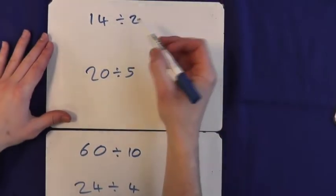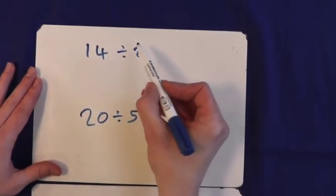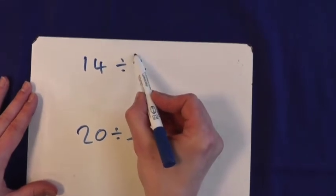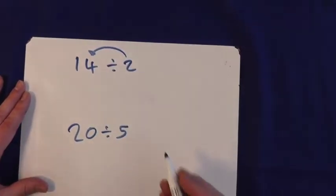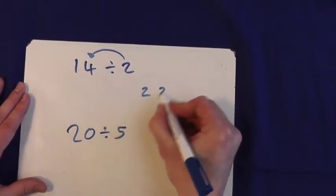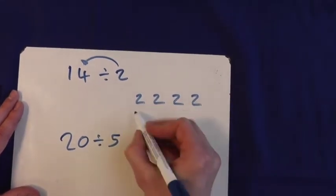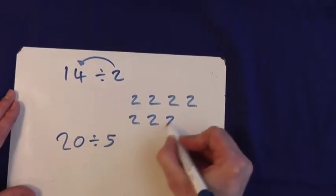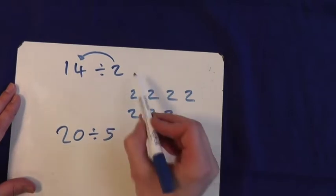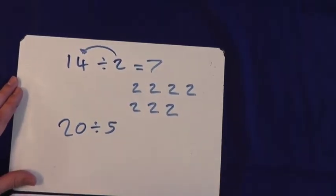So in this first example, 14 divided by 2, what we're really asking is, how many 2's make 14? 2, 4, 6, 8, 10, 12, 14. 7 2's. So 14 divided by 2 is 7.